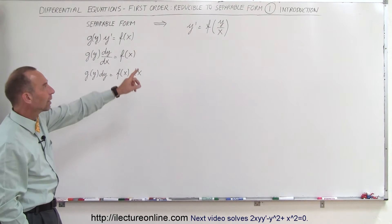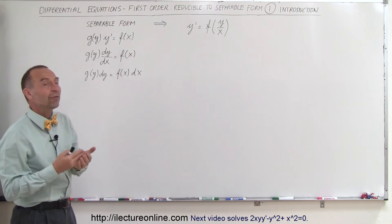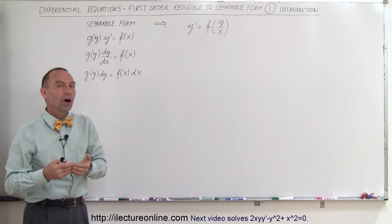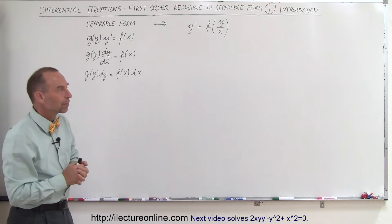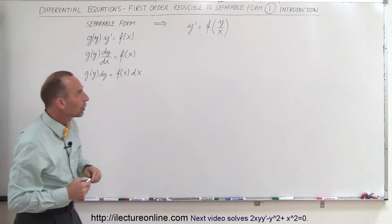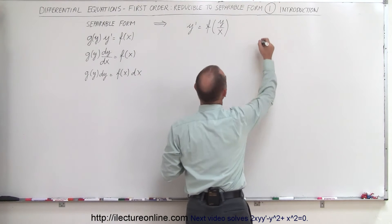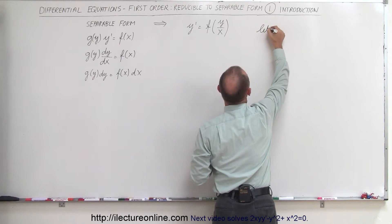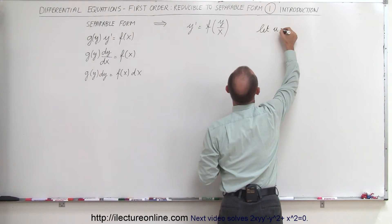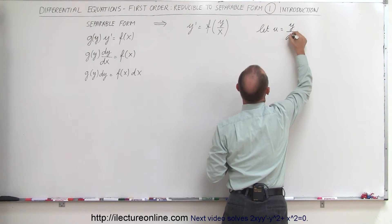But what if we have something that looks like this, where y prime is some function of y divided by x? Well then what we can do is make a simple substitution where we let u equal y divided by x.